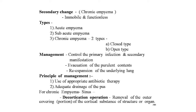Secondary changes include chronic empyema — immobile and functionless lung. Types: acute empyema — toxic, with shock, pleural pain, shallow and rapid respiration; sub-acute empyema — insidious onset, easily overlooked; chronic empyema — two types: closed (collection of pus completely walled off) and open (communicating with a bronchus, known as bronchopleural fistula). Management: control of primary infection, evacuation of pleural content, re-expansion of the underlying lung using appropriate antibiotic therapy and adequate drainage of the pus. For chronic empyema sinus: decortication operation — removal of the outer cortical covering of the lung structure.